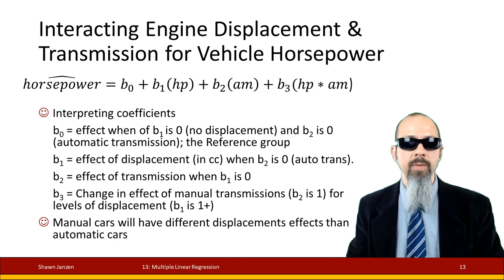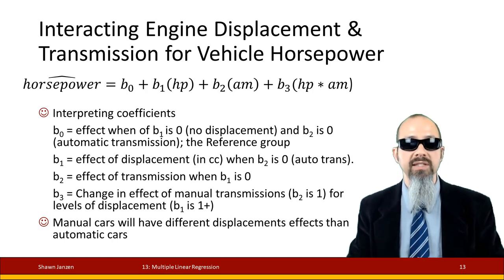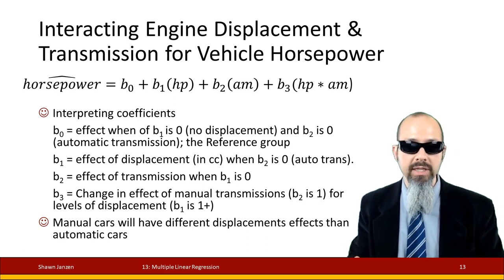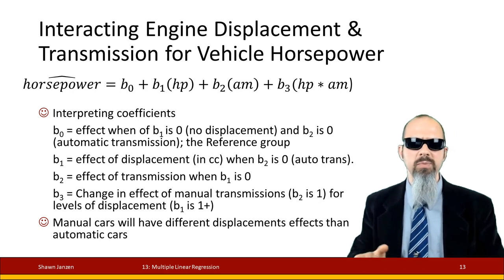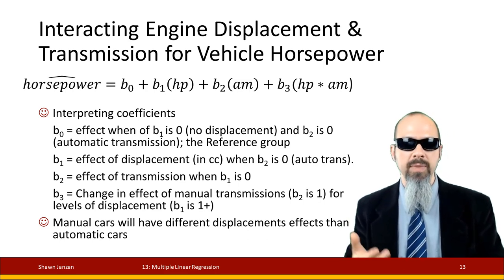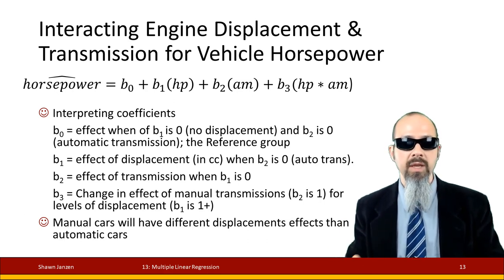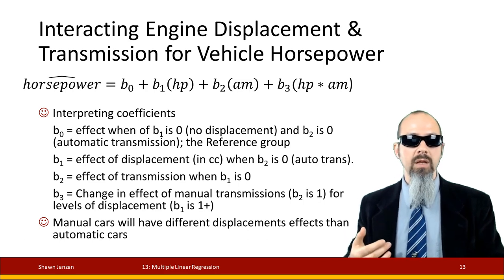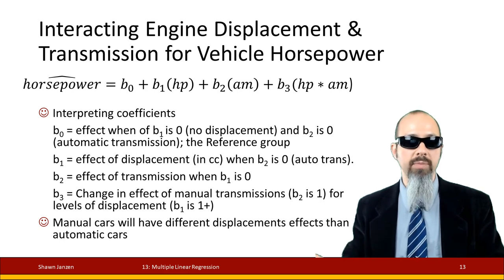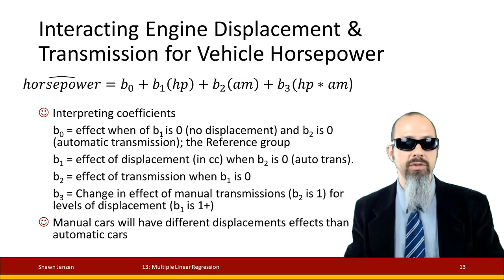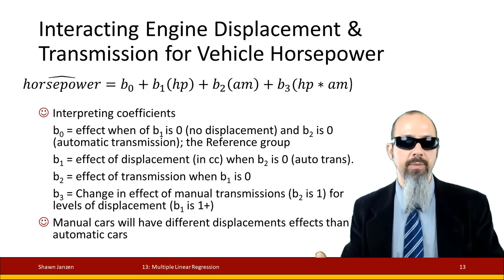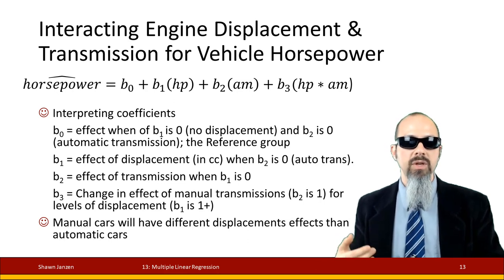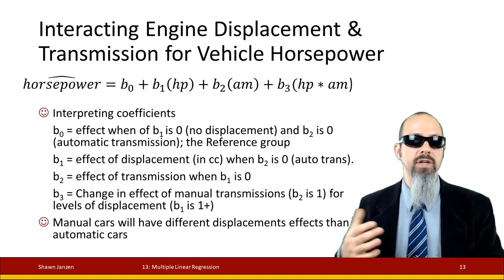Coming back to our regression equation for interpretation: B0 is our y-intercept — the effect when all other coefficients are zero. A zero for transmission is possible since we can have an automatic, but a zero for displacement is not very meaningful since you'd have no engine size. B1 is the effect of displacement in cubic centimeters. B2 is the effect of transmission when displacement is zero. B3 is the change in effect for a manual transmission at different levels of displacement — how manual cars vary differently from automatic cars across displacement levels.